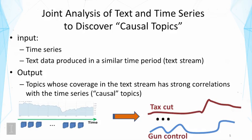All these cases are special cases of a general problem: joint analysis of text and time series data to discover causal topics. The input is a time series plus text data produced in the same time period — the companion text stream. This is different from standard topic models where we have just a text collection, and that's why we say time series serves as context. The output we want to generate is topics whose coverage in the text stream has strong correlations with the time series.